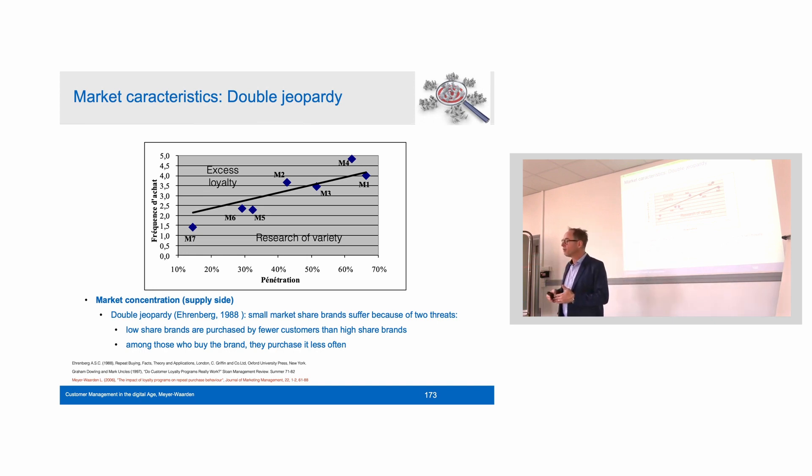And if you look at the frequency of audience, that is how many times people look at TF1 and at Direct 8 or NRJ Energy, we would probably also find again a lower purchase frequency or lower visiting frequency than for the TF1 channel. So we would again find double jeopardy, because smaller channels not only have less people who look at this channel, they look less frequently. The double jeopardy.